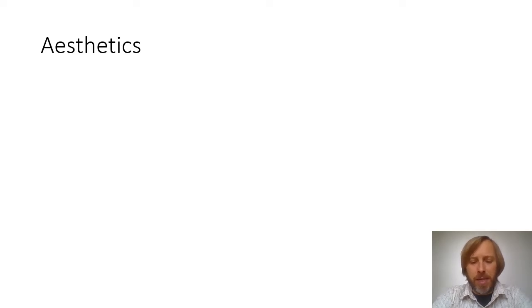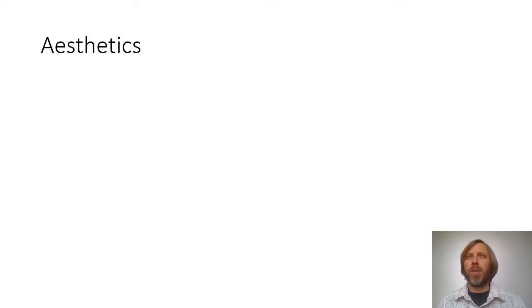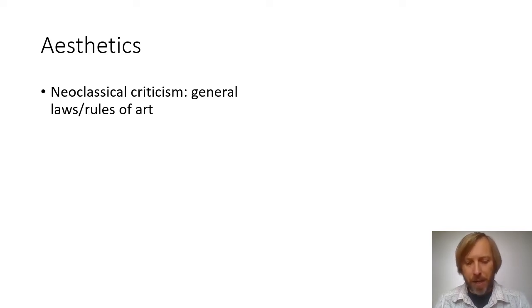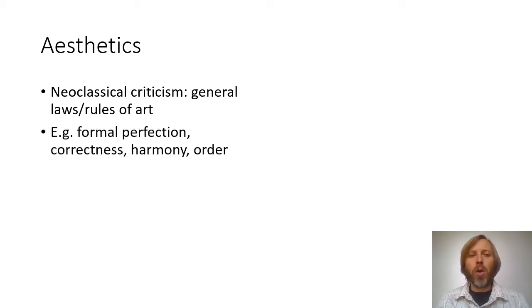Neoclassical criticism, developed particularly in the first half of the 18th century, attempted to include questions about art in a search for general laws. There was the idea that the ideal and perfectly organized cosmos must have clearly understandable laws guiding everything, so critics tried to find laws that also apply to art — general rules to explain what is great art and how to create a great piece of art. They came up with notions like formal perfection, correctness, adherence to standards and rules, harmony, and order.